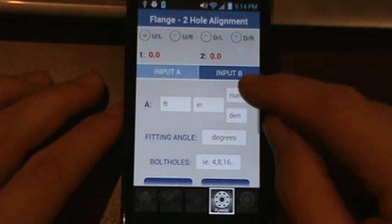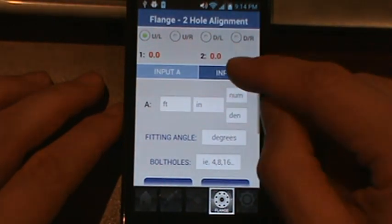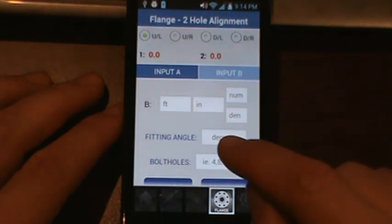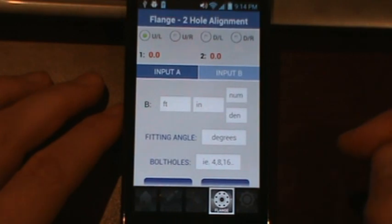You scroll down here you have the option of input A, input B, you have a fitting angle, and then you have to insert your bolt holes. And then you've got a clear and a calculate button.